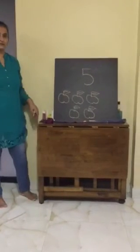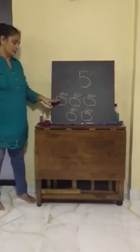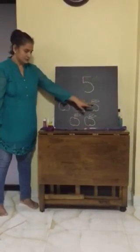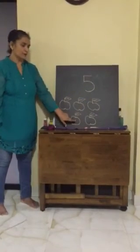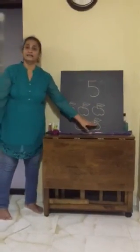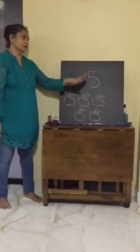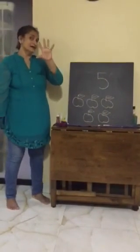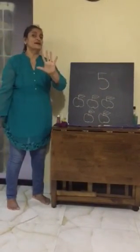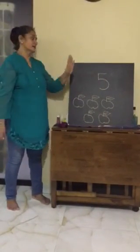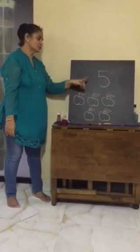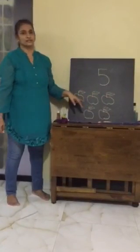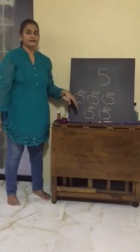Count how many apples are there? 1, 2, 3, 4 and 5. So which number did we learn today? Number 5. Practice this well at home, children, and count and draw your pictures. Thank you.